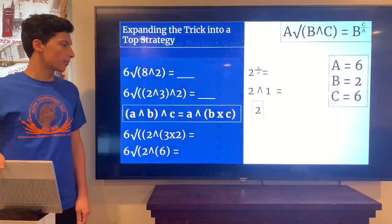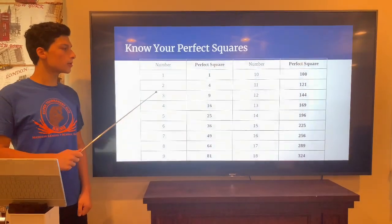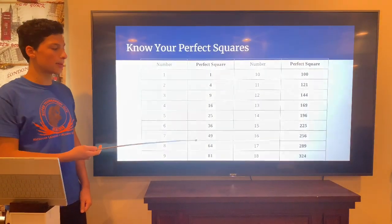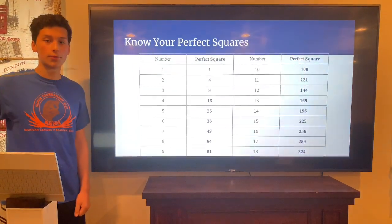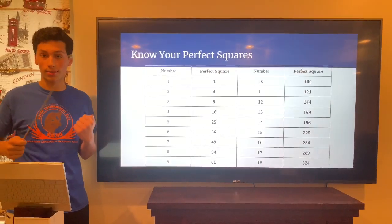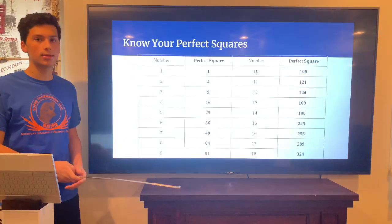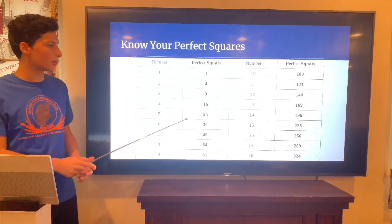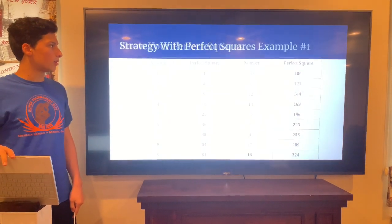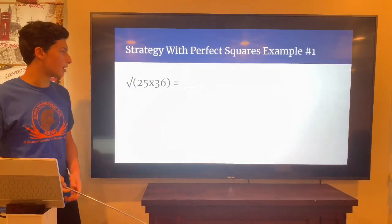Make sure to know your perfect squares — that's another key concept here. A perfect square is a number that, when put under a square root, comes out to a whole number. For example, the square root of 36 equals 6 because 6 times 6 is 36. Memorize these values both ways, because in these tricks you may need to recognize perfect squares quickly.